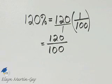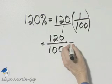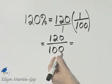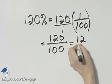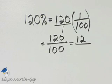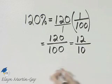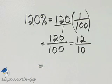Let's start simplifying this fraction. I know there's at least a common factor of 10. Numerator divided by 10 is 12, denominator divided by 10 is 10. And then what other common factors do we see?